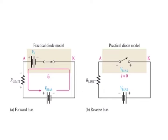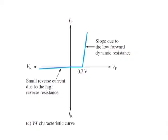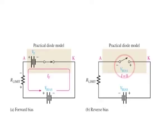You may want to use the ideal model when you are troubleshooting or trying to figure out the operation of a circuit and are not concerned with more exact values of voltage or current. The practical diode model includes the barrier potential. When the diode is forward biased, it is equivalent to a closed switch in series with a small equivalent voltage source equal to the barrier potential — that is, 0.7 volt — with the positive side towards the anode. This equivalent voltage source represents the barrier potential that must be exceeded by the bias voltage before the diode will conduct. When conducting, a voltage drop of 0.7 volt appears across the diode. When the diode is reverse biased, it is equivalent to an open switch, just as in the ideal model.